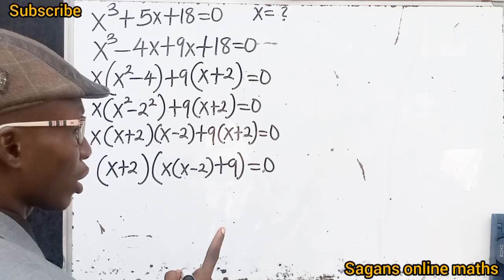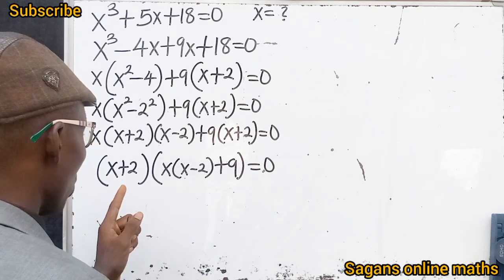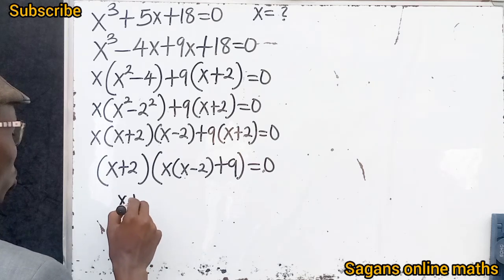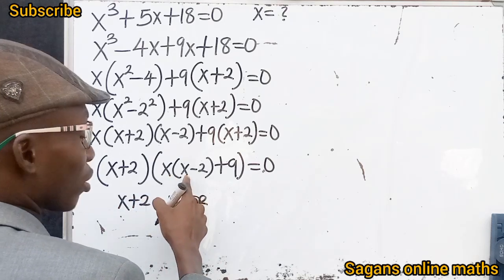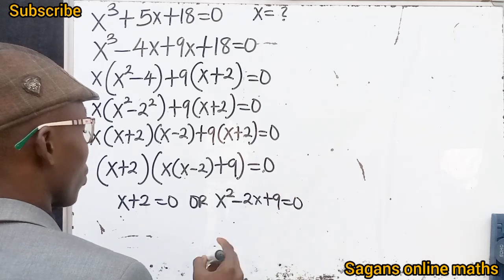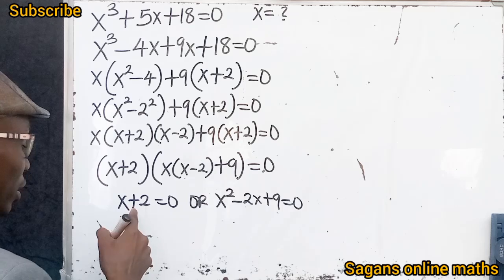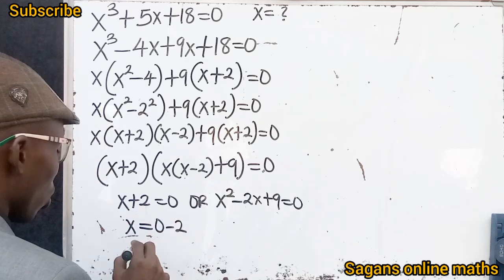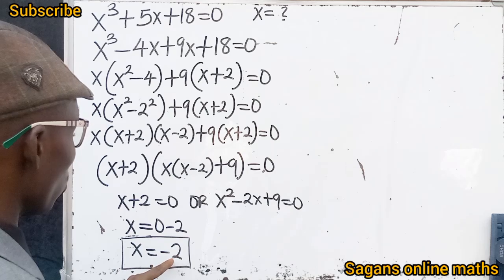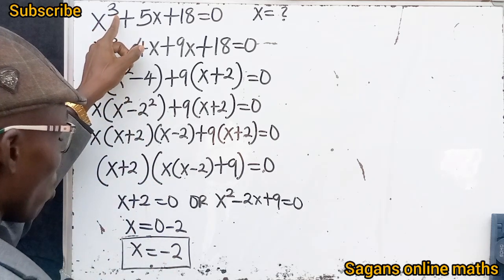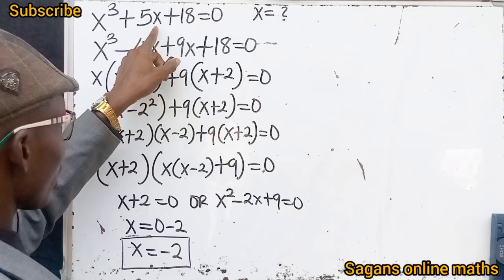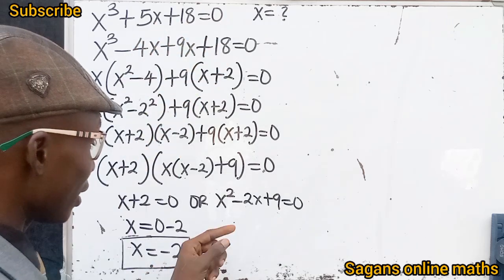Now let's apply the zero product property. When the product of two terms equals zero, each of them must be equal to zero. So either (x plus 2) equals zero, or (x² minus 2x plus 9) equals zero. From the linear equation, subtracting 2 from both sides gives x equals minus 2. This is one value of x. We can verify: minus 2 cubed is minus 8, and 5 times minus 2 is minus 10; minus 8 minus 10 plus 18 equals zero. Correct!